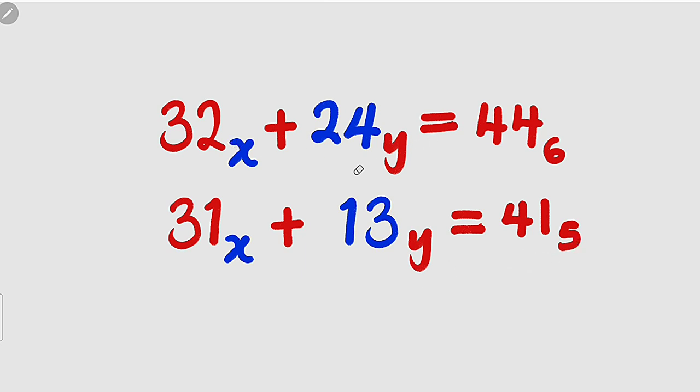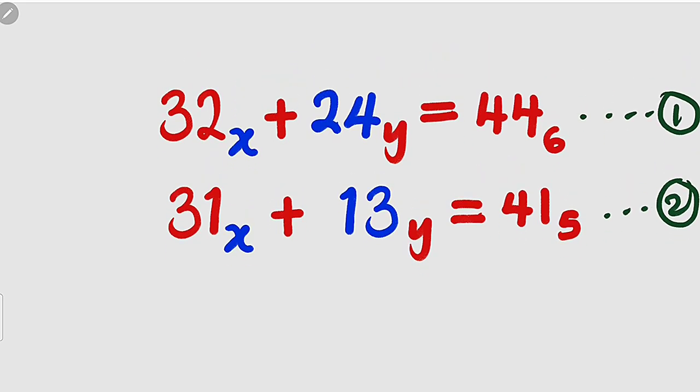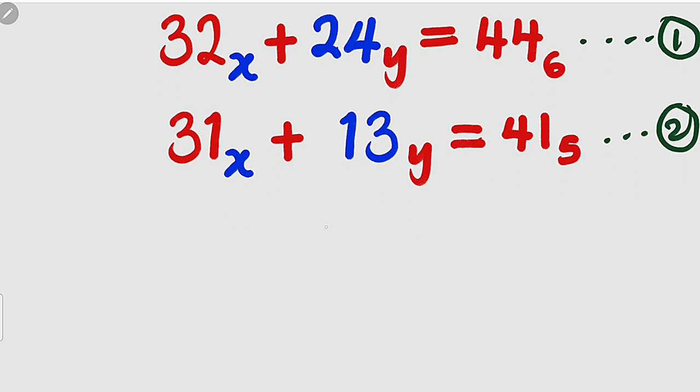So we are looking for the values of x and y that can satisfy the two equations simultaneously. Alright, let's get started. I would like to tag this as equation number 1 and tag this as equation number 2. So I would like to convert all these bases into base 10. So let me start with equation 1.